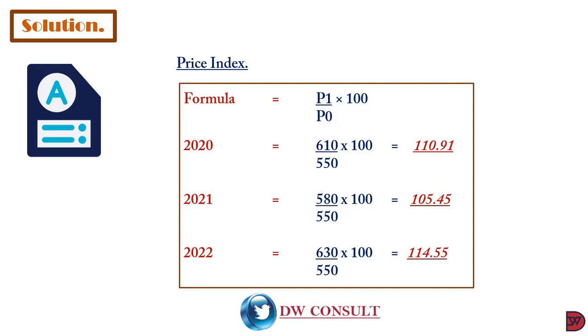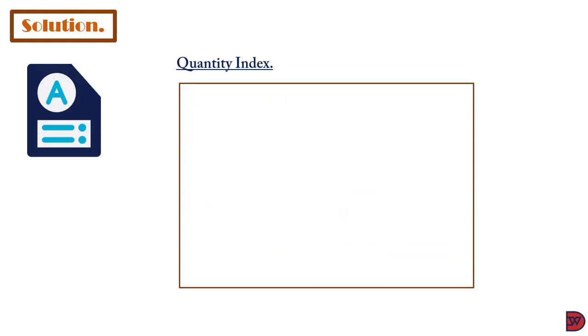Looking at the results, the change from 2019 to 2020 was higher than from 2019 to 2021, whereas from 2019 to 2022 the change was more significant. This cannot be the final determination—we'll have to investigate what accounted for these changes. Moving to quantity index, the formula is Q1 divided by Q0 multiplied by 100.